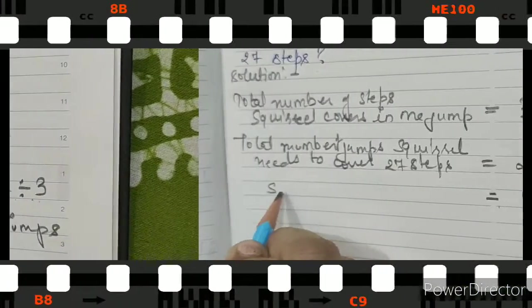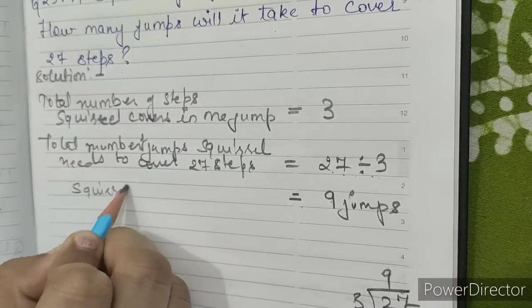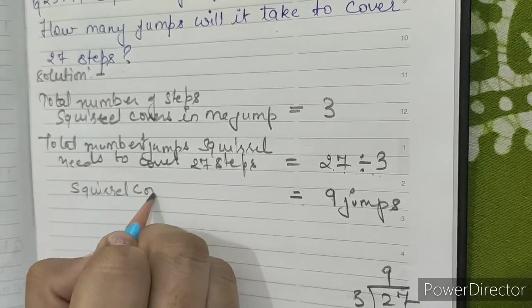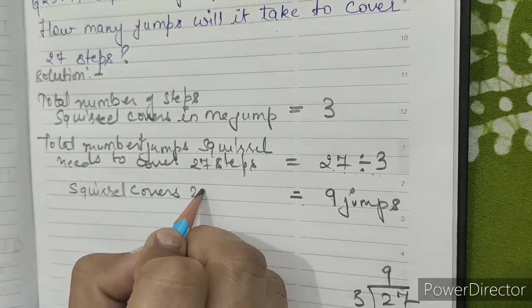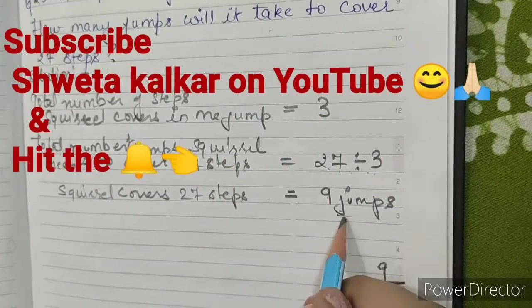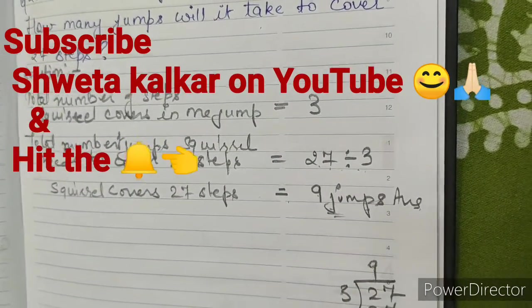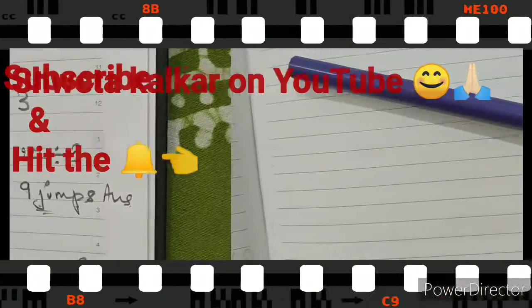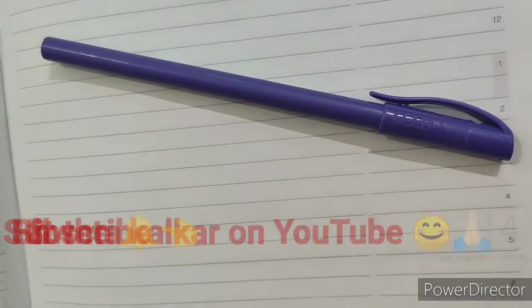So 27 divided by 3 equals 9. 9 jumps. The squirrel covers 27 steps in 9 jumps. This is our answer. Thank you and have a nice day.